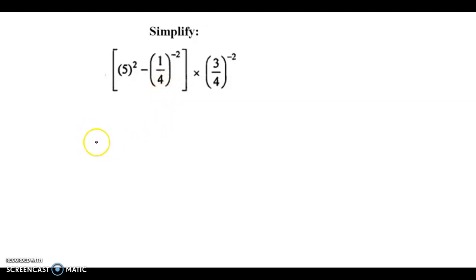Now here the expression is, here we have 5 square minus 1 by 4 raised to minus 2. This whole thing within the square brackets into 3 by 4 raised to minus 2.